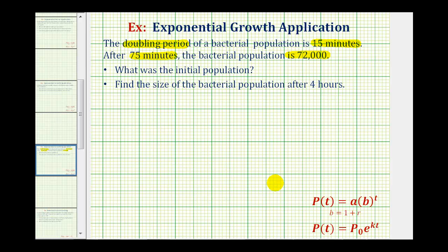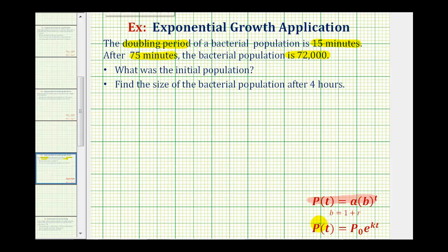To model this population, we can use either an exponential function in this form here, or this form here. In the previous video, I solved this exact same problem using an exponential function in the form p of t equals a times b raised to the power of t. So for this video, I want to show how we can solve this problem using the exponential function in the form p of t equals p sub zero times e raised to the power of kt, where p of t is the amount after time t, p sub zero is the initial or starting amount, k is the continuous growth rate, and t is the time.